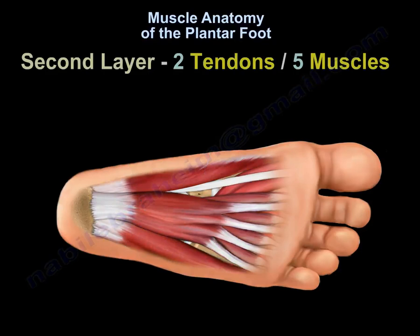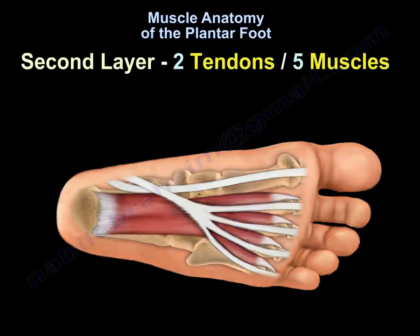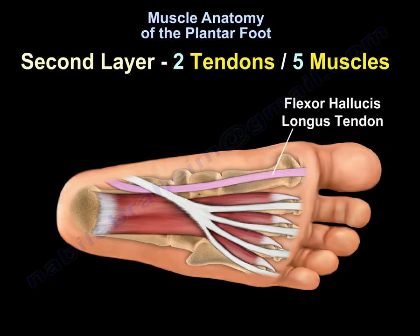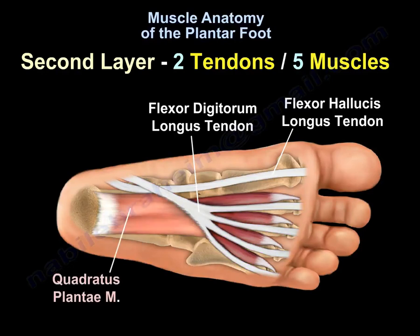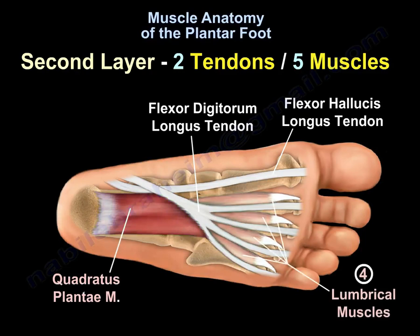The second layer has two tendons and five muscles. The tendons are the flexor hallucis longus tendon and the flexor digitorum longus tendon. The five muscles are the quadratus plantae muscle and four lumbrical muscles.